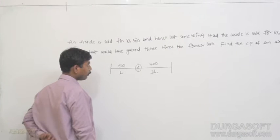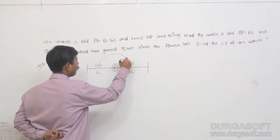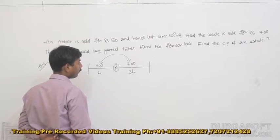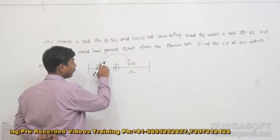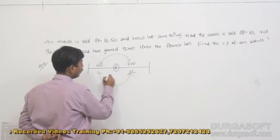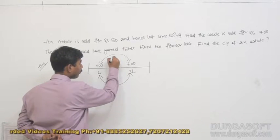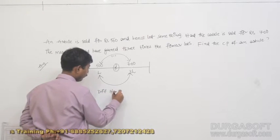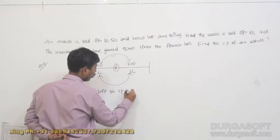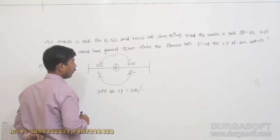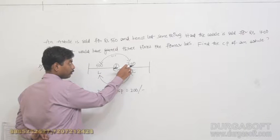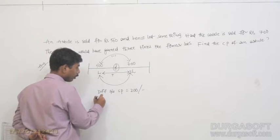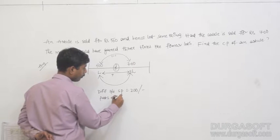When I talk about the difference between selling prices — 500 to 700 — that is how much? The difference between the selling prices is Rs.200. Next, difference between the selling prices is Rs.200 means that Rs.200 is equal to how many parts of a loss. When we talk about parts of a loss here, parts of a loss equals to...